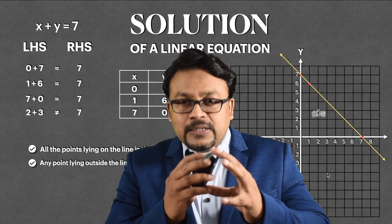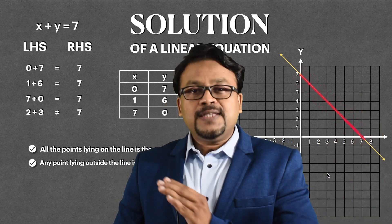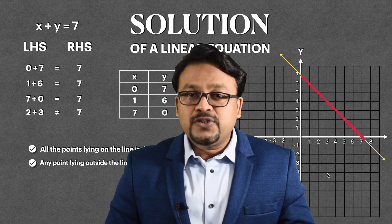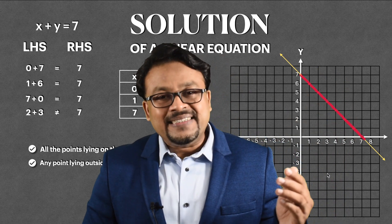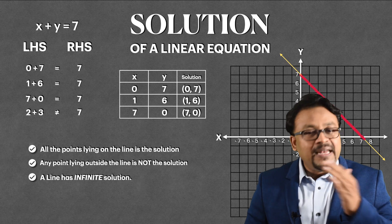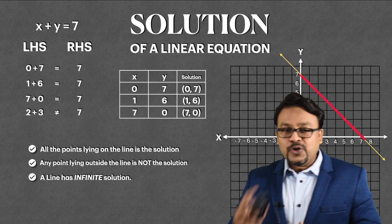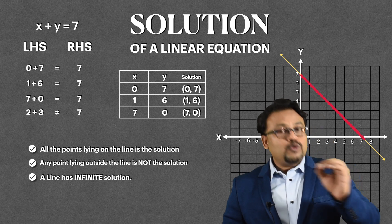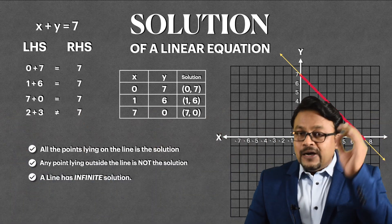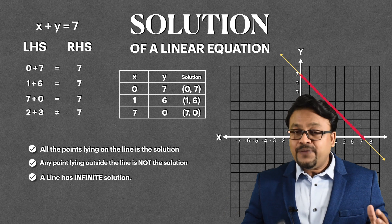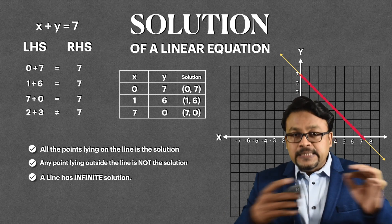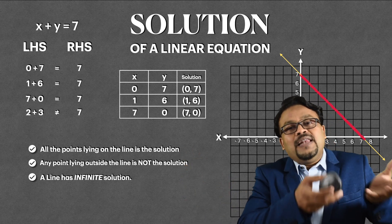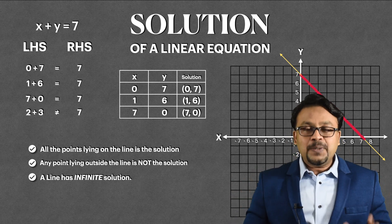Students, you might have a question: since there are so many points on a line, are all of them solutions? Yes! As per the definition, any point which lies on the line happens to be the solution. A single line is made up of an infinite number of points. Therefore, a single line has infinitely many solutions. So let us recall the three points: a solution is a point lying on the line; any point outside the line is never the solution; and a single line has infinitely many solutions because all those points lie on it.